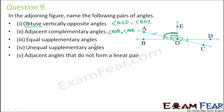Equal supplementary angles means two angles whose sum is 180 degrees and whose individual values are also equal — so each is 90 degrees. When you look at this angle, it is 90 degrees, and this other angle is also 90 degrees. These two together form 180 degrees, so they are supplementary. The answer is angle EOD and angle EOB.